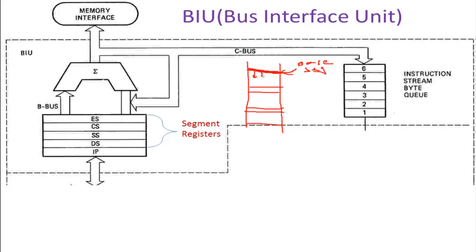There was also a displacement, and to hold this displacement we have the offset address. To hold the base address of the code segment we have the CS register. To hold the starting address or base address of the extra segment we have ES. So CS, ES, DS, and SS all come under the BIU. They are all 16-bit registers: ES for extra segment, CS for code segment, SS for stack segment, and DS for data segment.